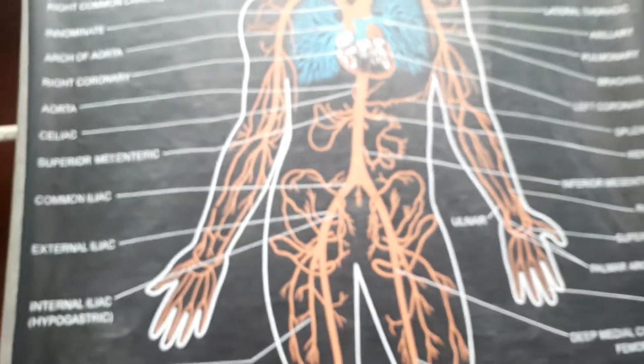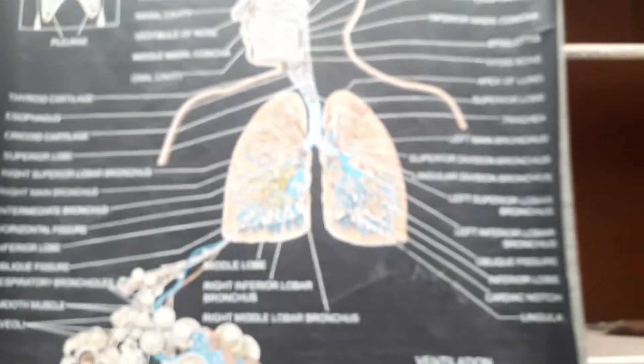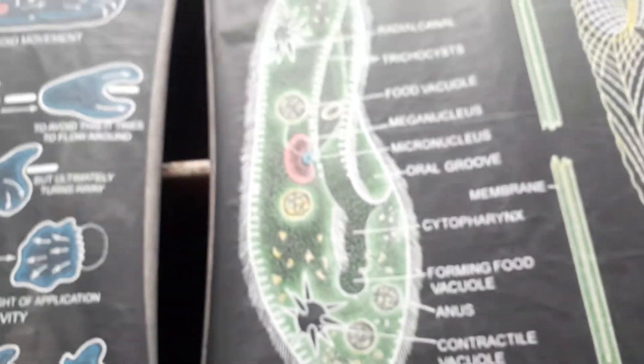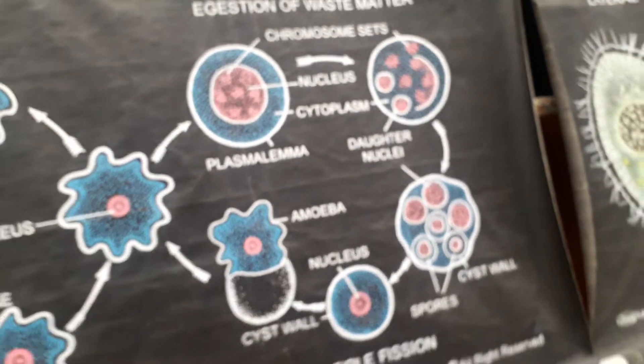Here, again, you see the cell — cell model of the cell. This is the circulatory systems: heart, vein, artery, and capillaries. This is the respiratory systems. Paramecium, amoeba — amoeba binary fission and multiple fissions in the amoeba. Clear?